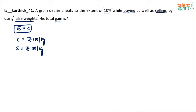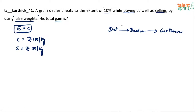So what exactly happens here? He goes to the distributor, from whom he buys. From the distributor the item comes to the dealer, and from the dealer it goes to the customer. Now, the distributor is supposed to give him 1 kg. But the dealer uses a false weight, so instead of getting 1 kg he actually gets 1.1 kg. The dealer says he wants 1 kg and pays 100 rupees for it.